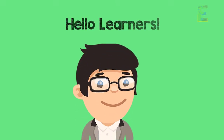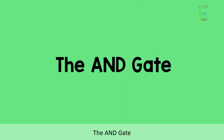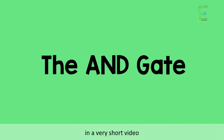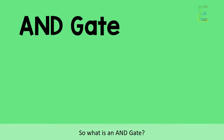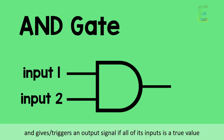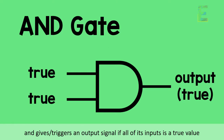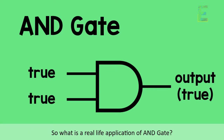Hello learners, today we are going to talk about the AND gate. An AND gate is a basic digital logic gate which consists of more than one input and triggers an output signal if all of its inputs is a true value.